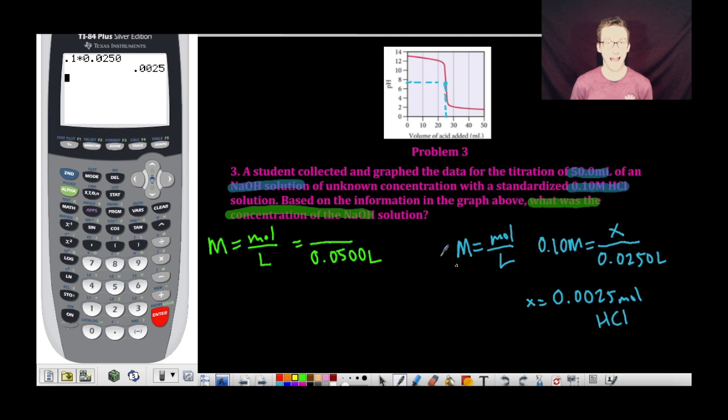Now, in order to determine how many moles of NaOH reacted with that 0.0025 moles of HCl, I need a balanced chemical equation to see the stoichiometric relationship. So HCl reacts with NaOH. It's a neutralization reaction. We're going to form water and sodium chloride. A quick scan lets me know that this is already balanced, so the ratio of everything is 1 to 1,